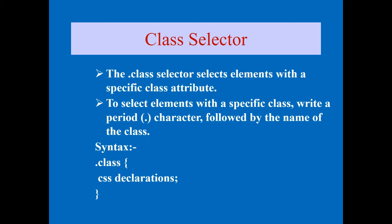The first is the class selector, which selects elements with a specific class attribute. You create a class, put all properties and values in it, and call that class anywhere in the page. For external CSS you can call it across any page; for internal CSS you can use it multiple times on that page. The syntax uses a dot (period symbol) followed by the class name, then curly brackets containing the CSS declarations.